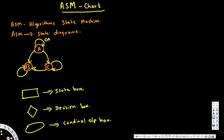The conditional output box will be drawn if the output is one. Usually they give you inputs and outputs — the first one is input and the second one is output. If the output is one, we have to draw that conditional output box.